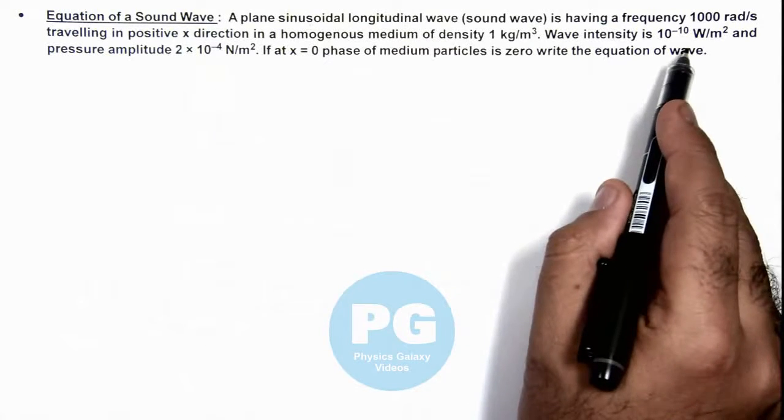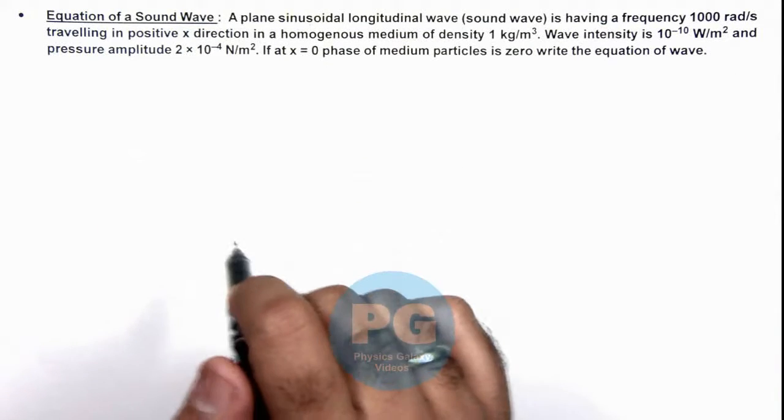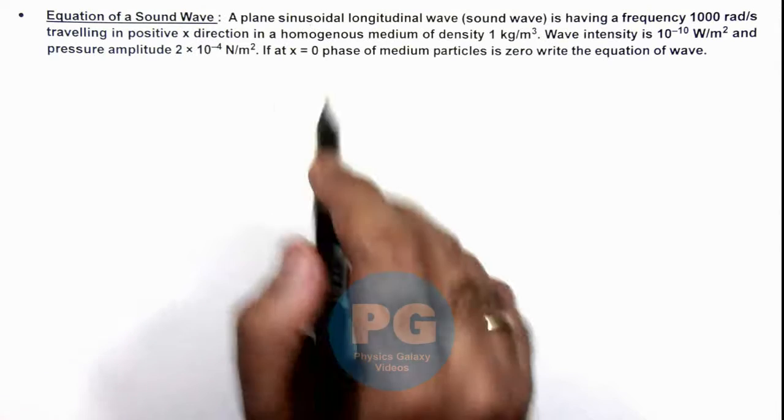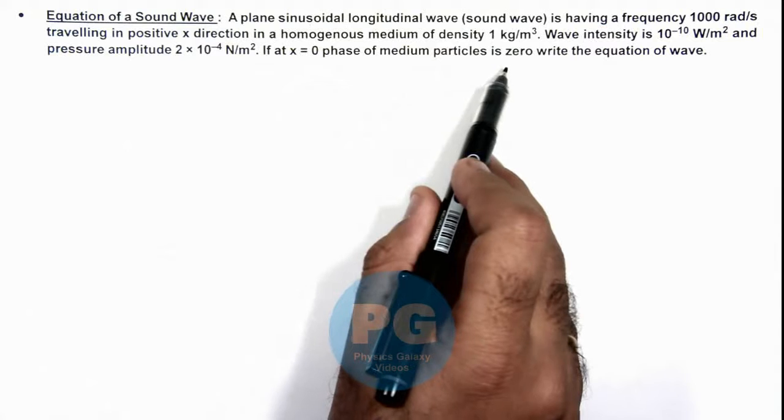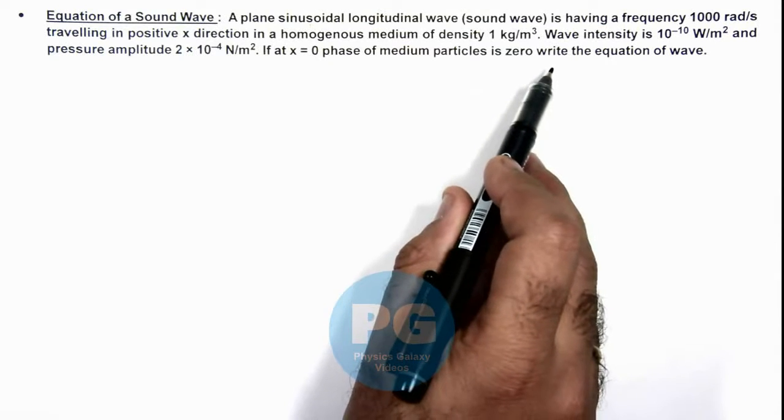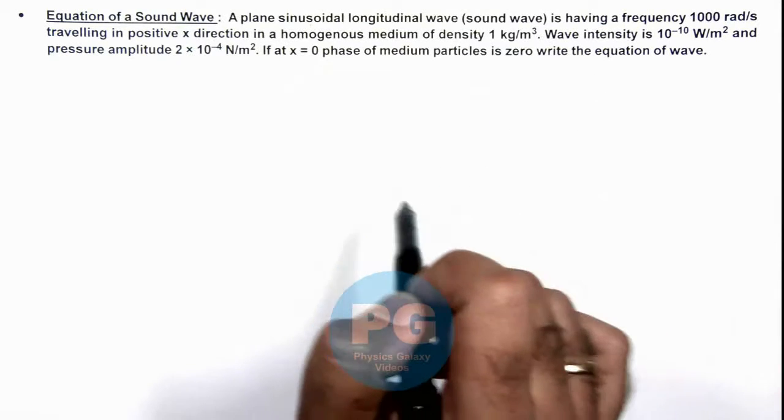The wave intensity is also given and pressure amplitude is also given here. Now it is saying if at x equal to zero, phase of medium particle is zero, we are required to write the equation of wave.